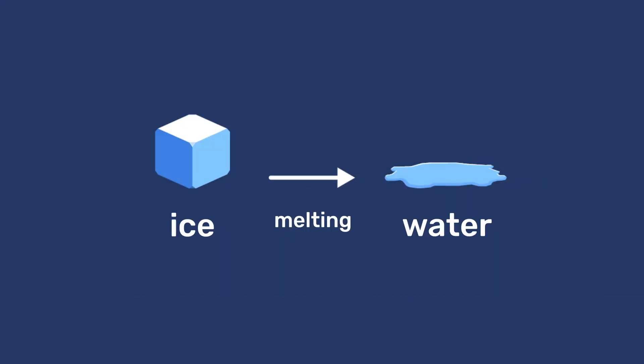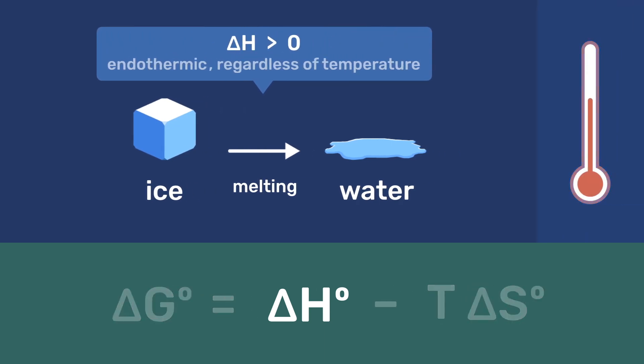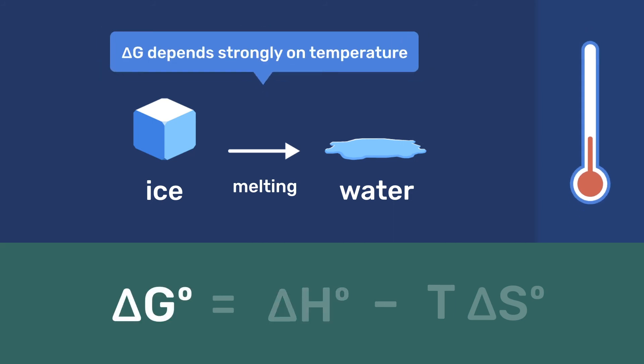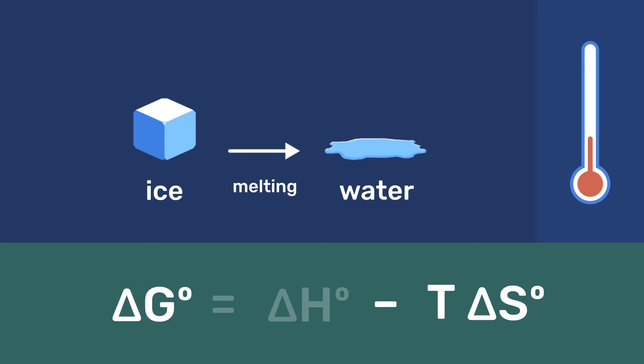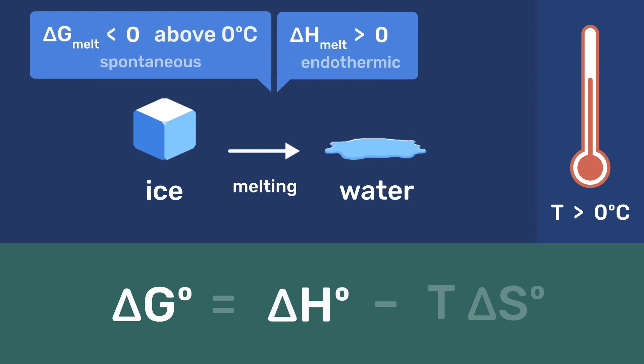Enthalpy and entropy changes are not much affected by temperature. So the melting of ice is endothermic, with a positive ΔH regardless of temperature. However, the free energy depends strongly on temperature through the term minus TΔS. This is why the free energy for melting is negative above 0 degree C, giving it a spontaneous nature even if it is endothermic.